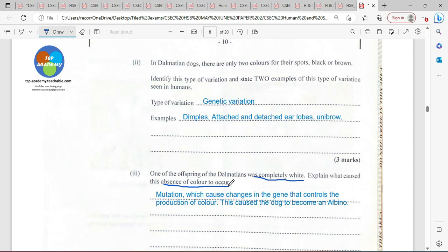So it's caused by a mutation which causes changes in the genes that control the production of the color. This caused the dog to become an albino. You understand that if albino were in humans, what would have happened is that the mutation would have affected the genes and pretty much turned off the melanin, so you wouldn't get that dark color.